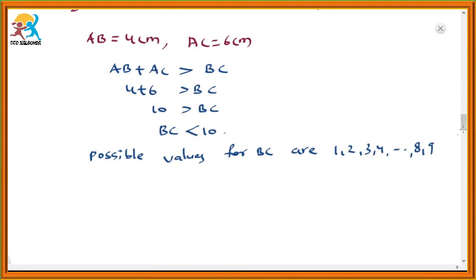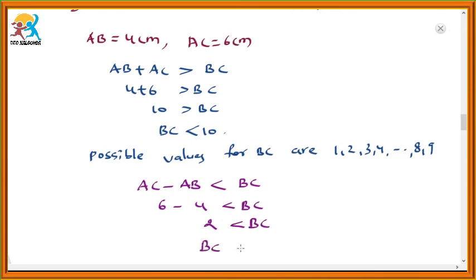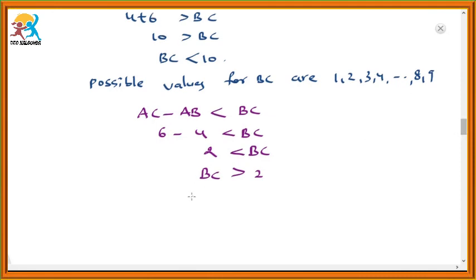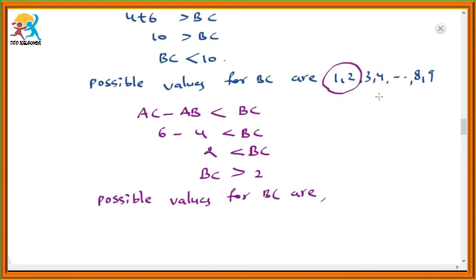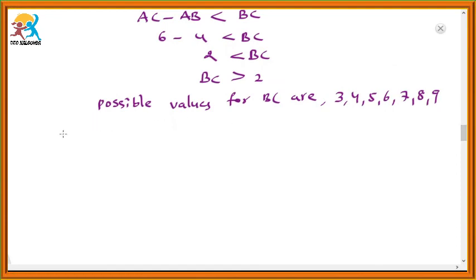And we have one more inequality: the difference of two sides is less than the third side. So AC minus AB is less than BC. AC is 6, AB is 4, so 6 minus 4 is 2, which is less than BC. That means BC is greater than 2. So the possible values for BC are 3, 4, 5, 6, 7, 8, 9. Here, the question asked is how many types of triangles can be obtained. We get 7 types of triangles with these measurements.